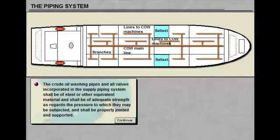The crude oil washing pipes and all valves incorporated in the supply piping system shall be of steel or other equivalent material and shall be of adequate strength as regards the pressure to which they may be subjected and shall be properly jointed and supported.